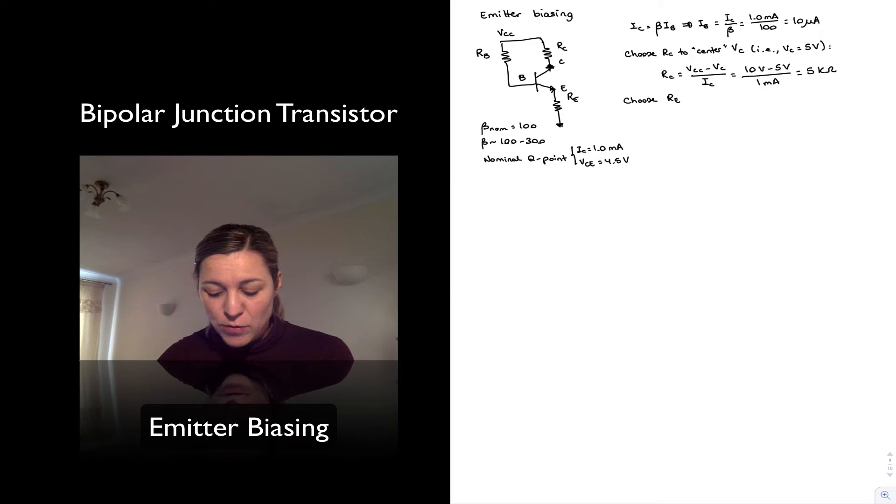that means that the voltage drop across the emitter resistor needs to be 0.5 volts. So set VE at 0.5 volts.